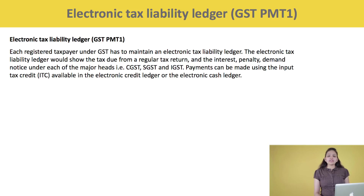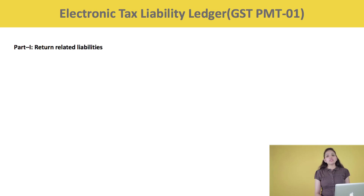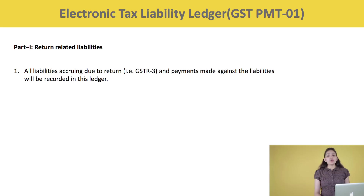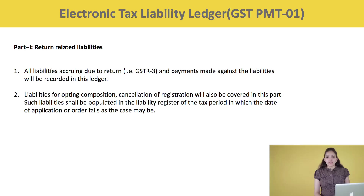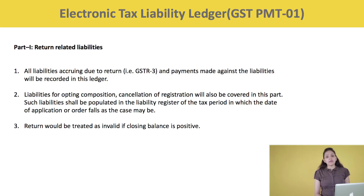The Electronic Tax Liability Ledger consists of two parts. Part 1 deals with return-related liabilities. All liabilities accruing due to return i.e. GSTR 3, and payments made against those liabilities, will be recorded in this ledger. Liabilities for opting composition or cancellation of registration will also be covered in this part. Such liabilities shall be populated in the liability register of the tax period in which the date of application or order falls. The return would be treated as invalid if the closing balance in Part 1 is positive.